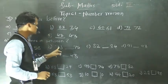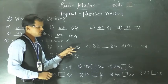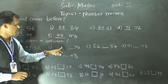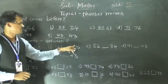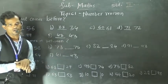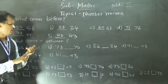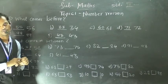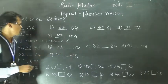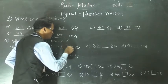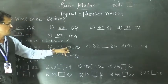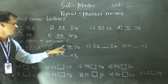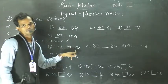Next: 73 — blank place — and 75. So in between 73 and 75, which number comes here? See: 71, 72, 73, 74, 75. So in between these two numbers, 74 comes. So 74 is the between number of 73 and 75.